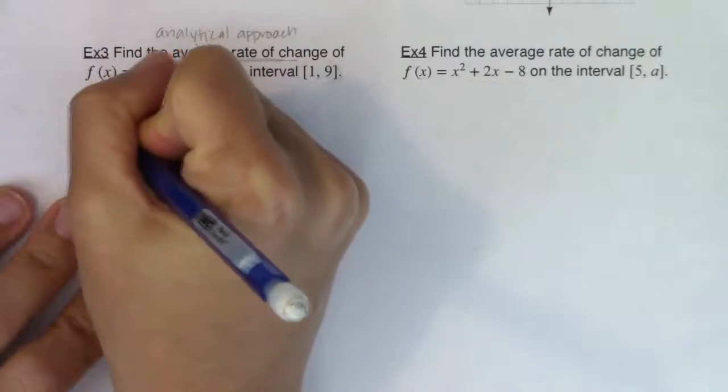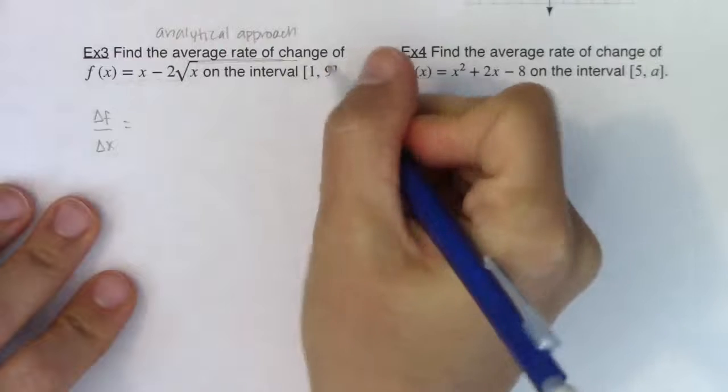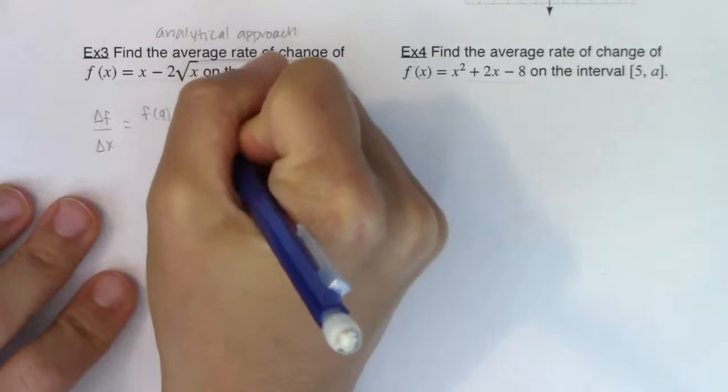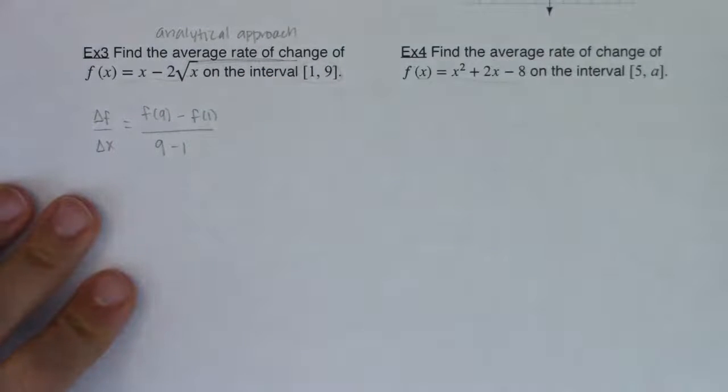So I would like the change in f in ratio to the change in x, and it looks like my two x values are 9 and 1, so I'll do f of 9 minus f of 1 in ratio to 9 minus 1.